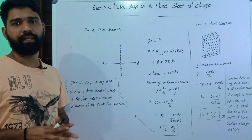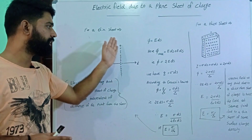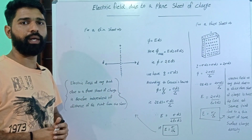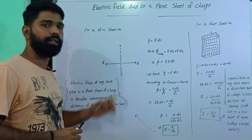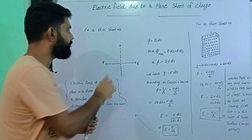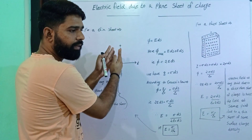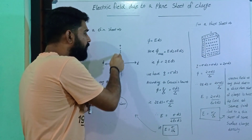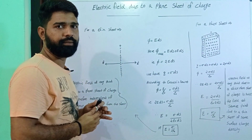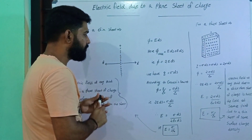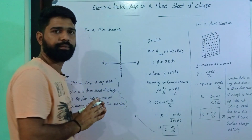Electric field due to a plain sheet of charge. Here we consider a thin sheet of charge — a plain sheet where the thickness is very minute. We assume positive charges distributed across it. This is a thin sheet with positive charges.